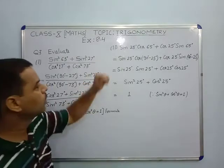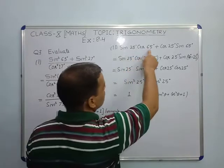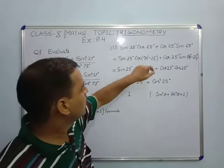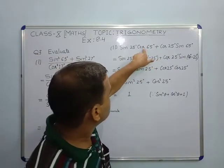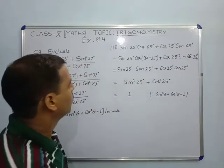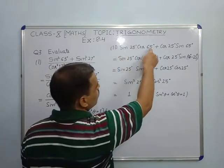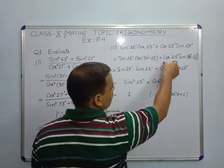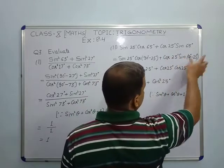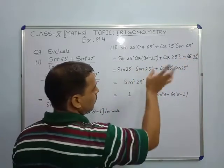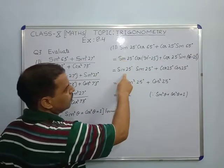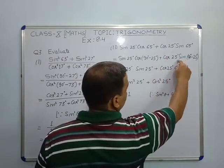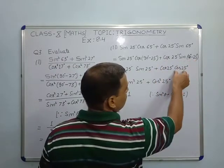Now come to the second part: sin 25° cos 65° + cos 25° sin 65°. In this case, we will write cos 65° as sin(90° - 65°) because we know that cos θ = sin(90° - θ). We will write cos 65° as sin 25°.